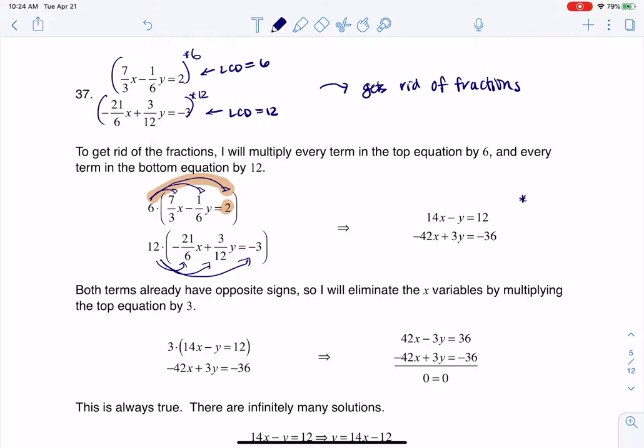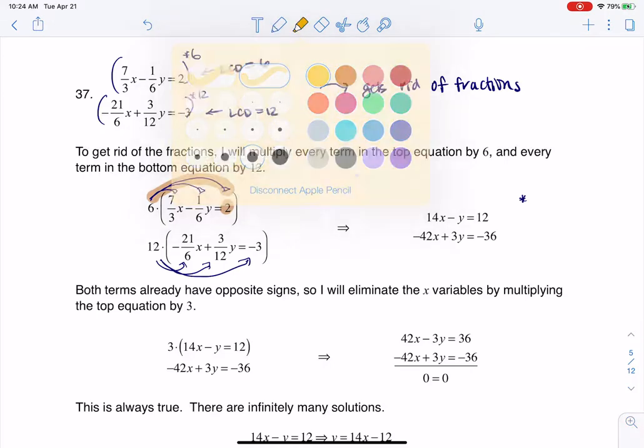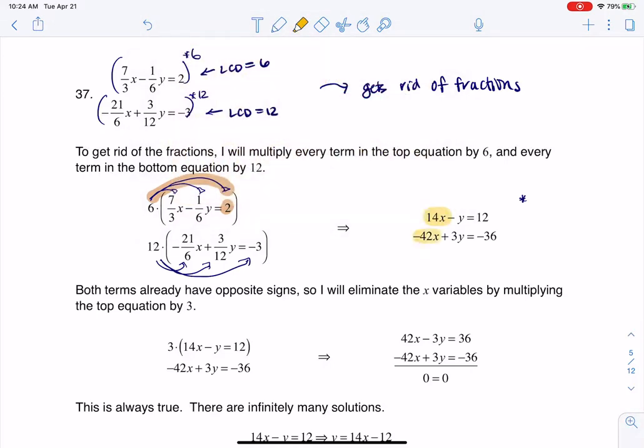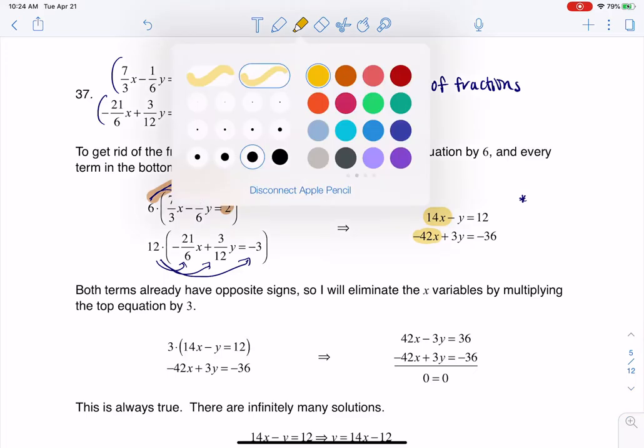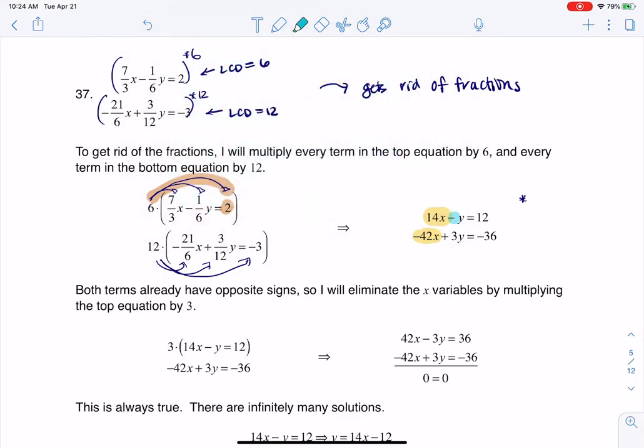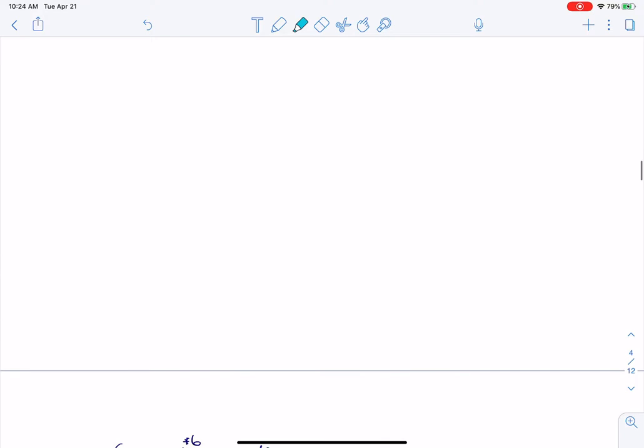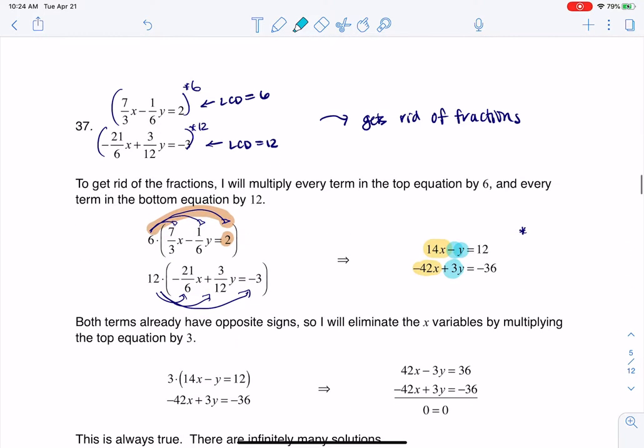And then just looking at them, it's up to you what you want to do. When I look at this, I'll color code it—I can see that the X's have opposite signs, so that's good. But then the Y's also have opposite signs. They have a negative and a positive. So it's up to me which variable I want to eliminate.